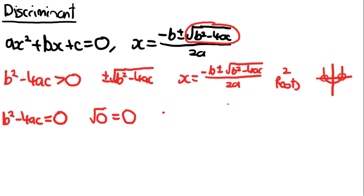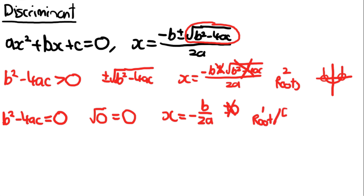When you apply the quadratic formula, x just equals minus b over 2a, because the b squared minus 4ac term is now gone — it's equal to 0 — and the plus or minus aspect disappears too, since plus or minus 0 makes no difference. So we get only one root, or more technically, equal roots. On the graph, this is where the parabola just touches the x-axis at one point.